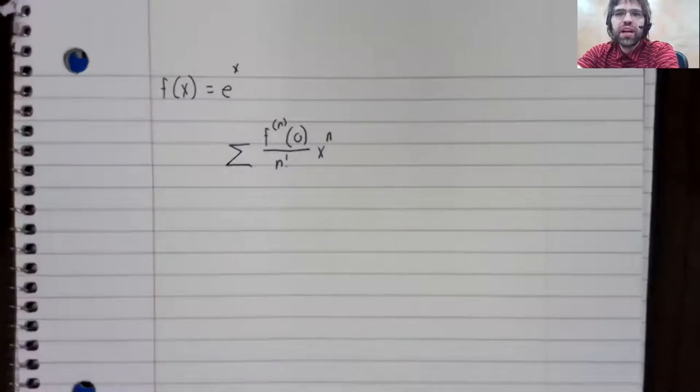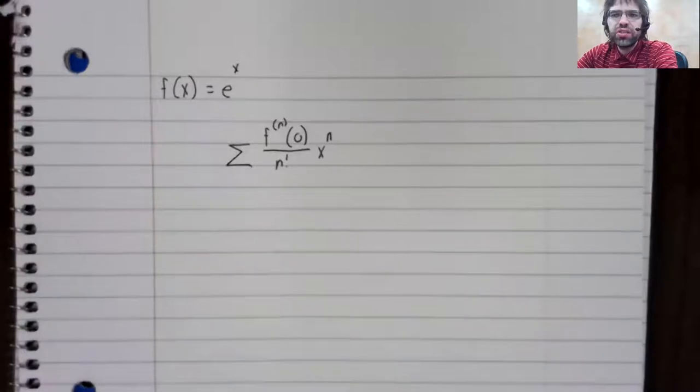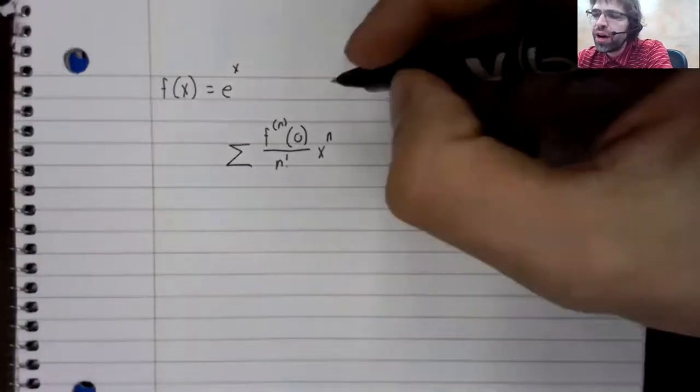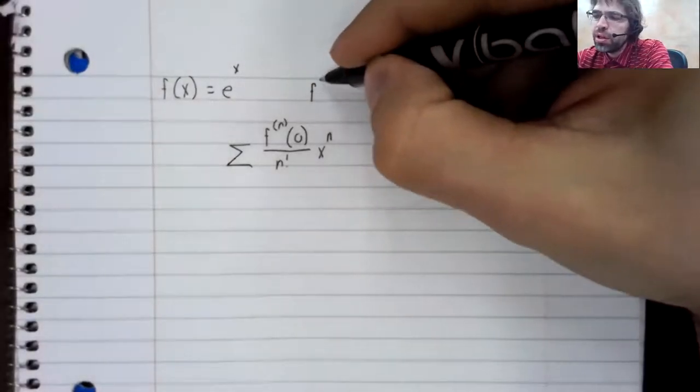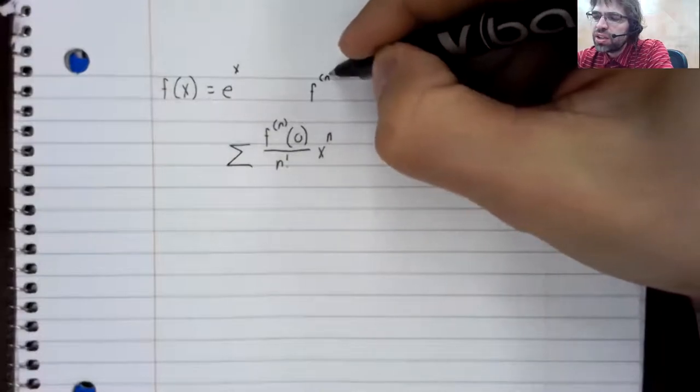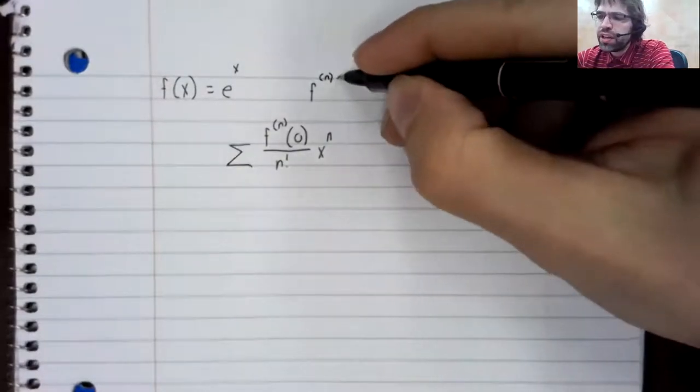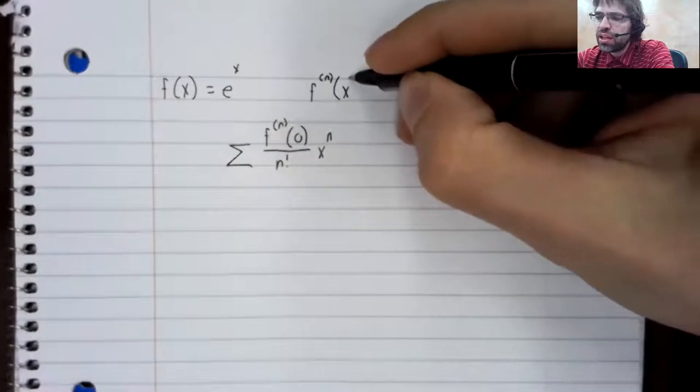Let's do an example. We'll find the MacLaurin series of e to the x. This is the standard function whose MacLaurin series is easiest to find because every order derivative is the same.